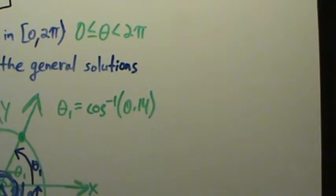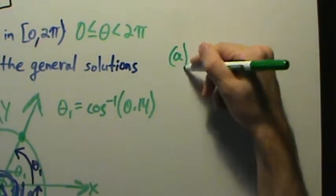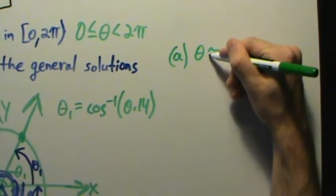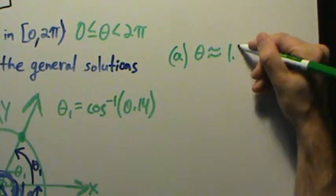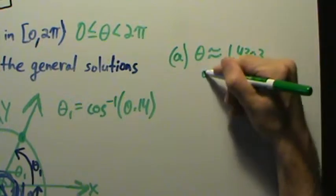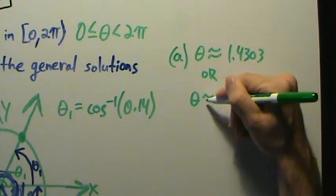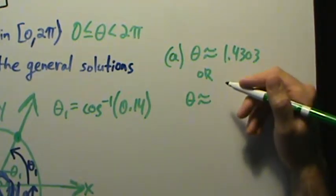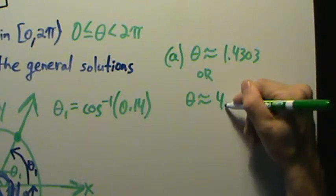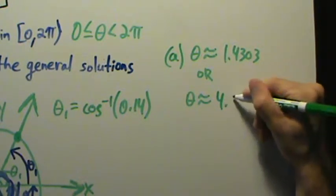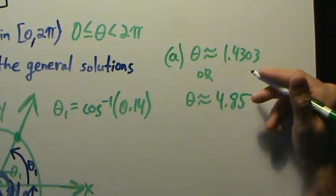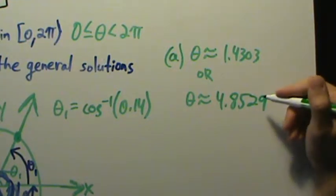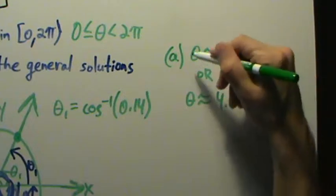So for part A, the answers are theta is approximately equal to 1.4303, or theta is approximately equal to 4.8529, I believe we said. Yes. Okay, so that's it for part A.